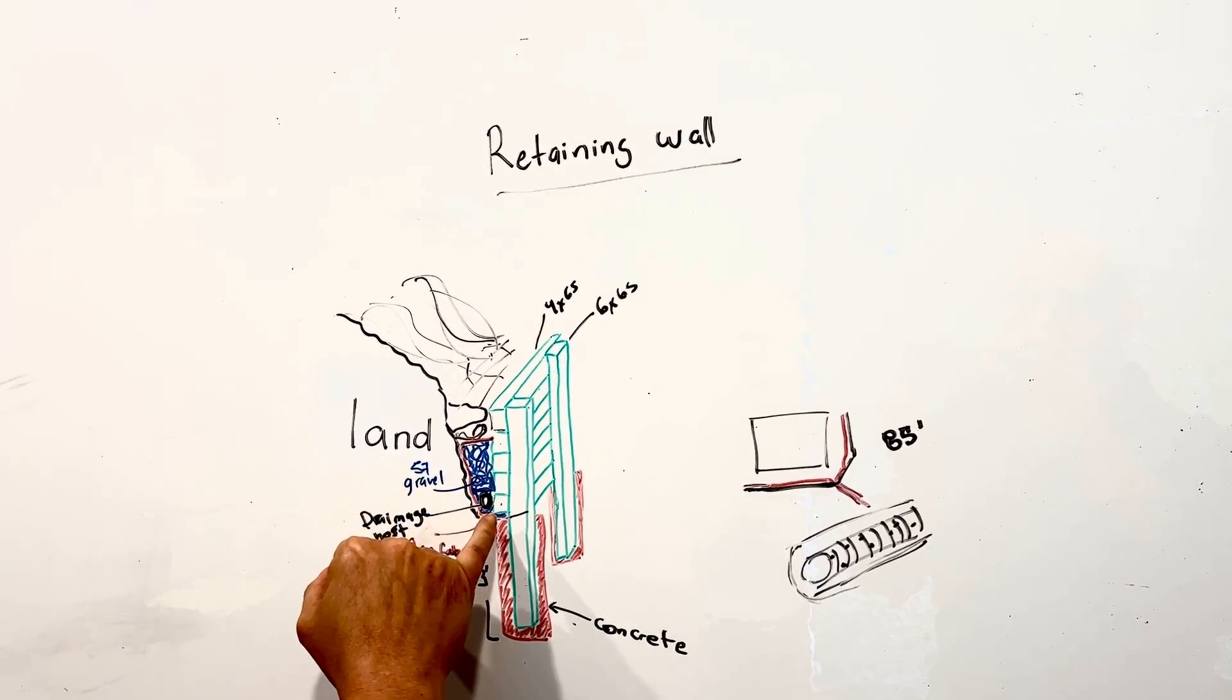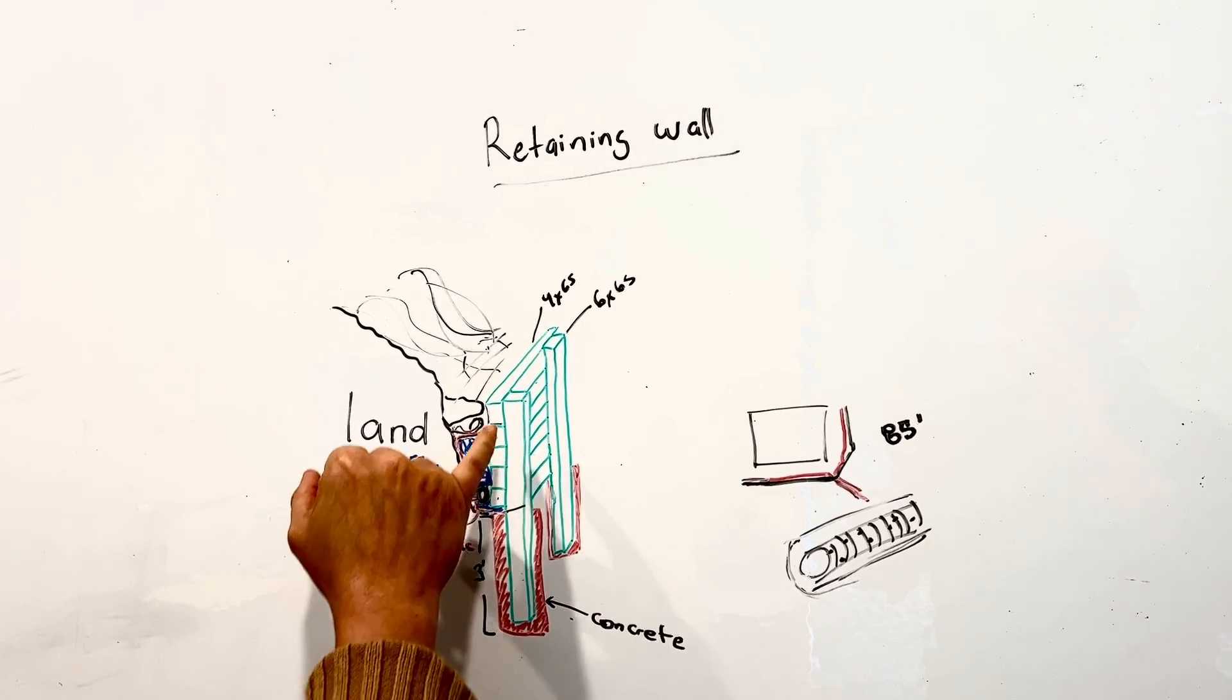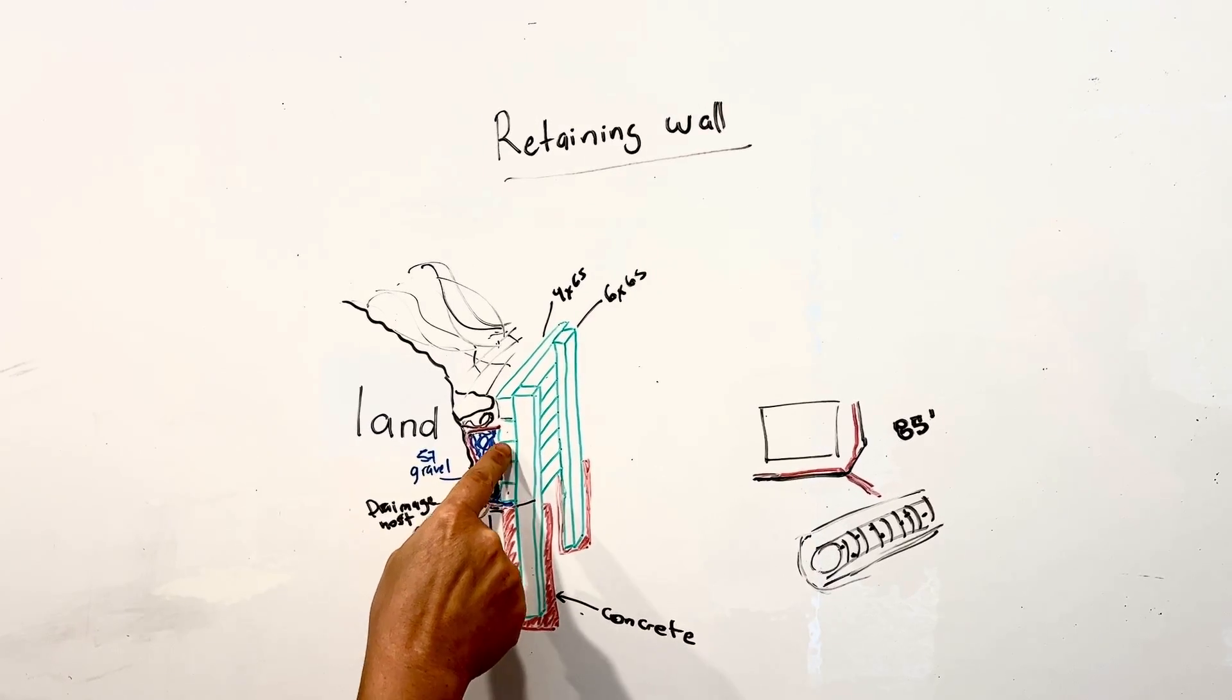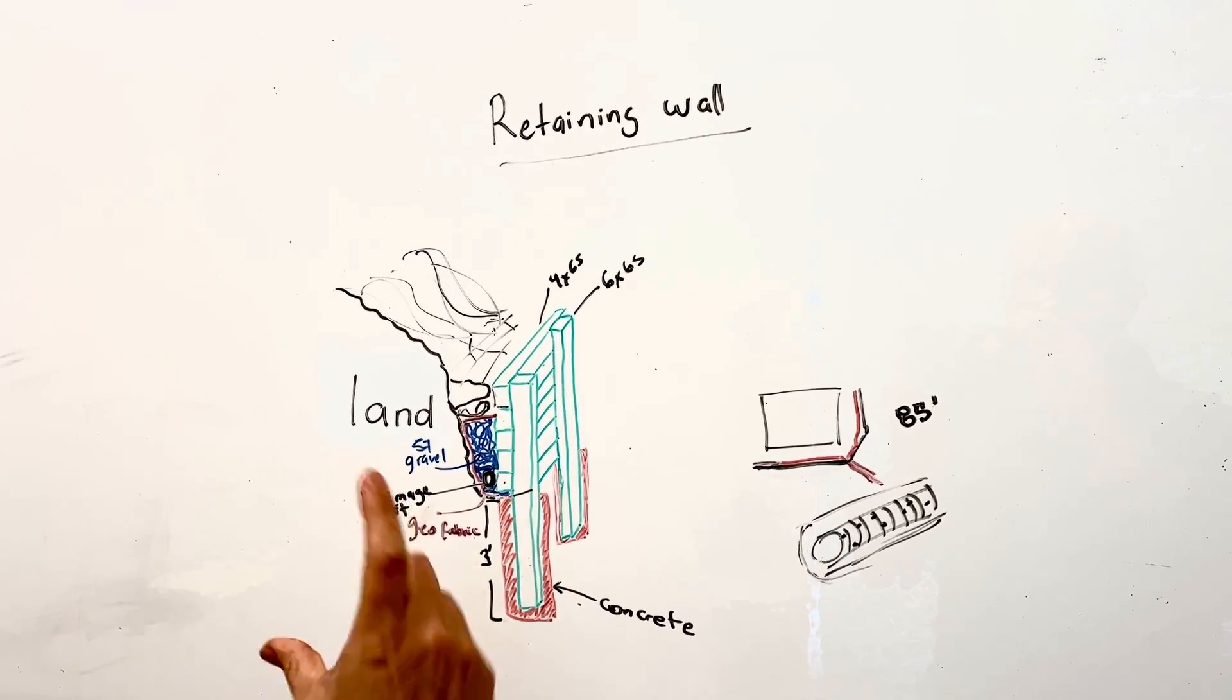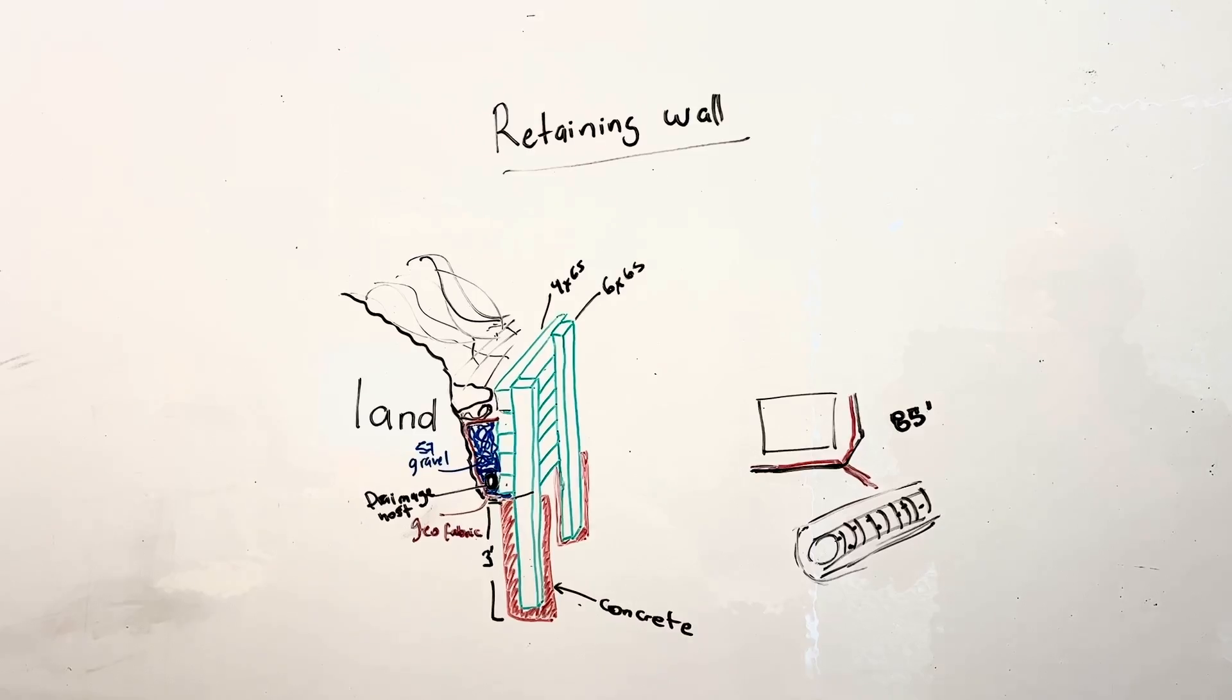The retaining wall is going to be built with four by sixes. So those are going to be four by sixes, four being the depth, six being the height.